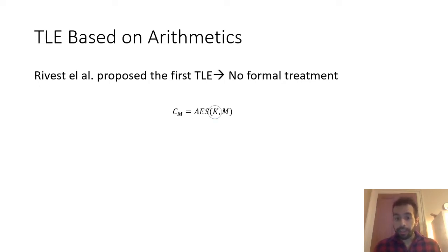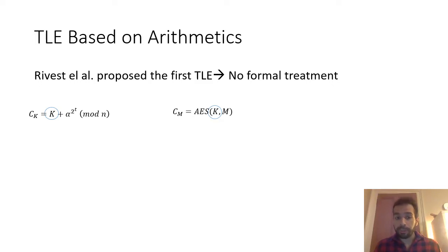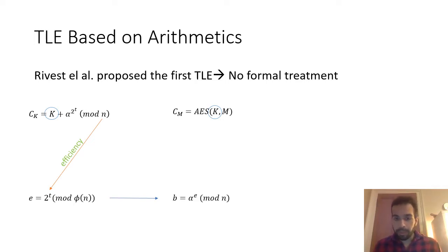Next, the key K is hidden into a puzzle named CK. Specifically, on the key K, we add A to the power 2^T modulo N. Because the initiator of the puzzle is aware of the factorization of N, they can speed up computations by first computing E, which equals 2^T modulo φ(N), where φ is the Euler function. After that, we compute B = A^E. The resulting ciphertext is a tuple where the first argument is the composite number N, the second is the base A, the third is the difficulty T, the next is the puzzle CK, and the last is CM, which is the result of the symmetric encryption.